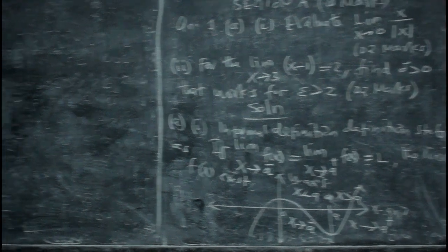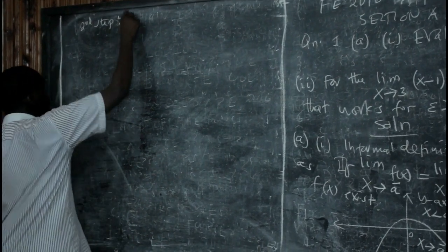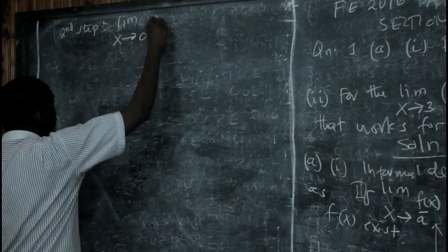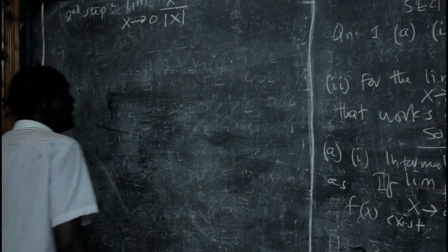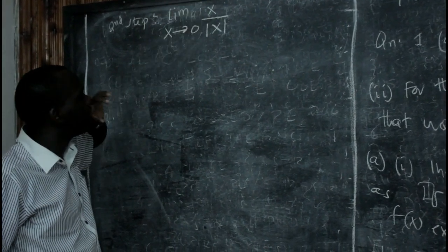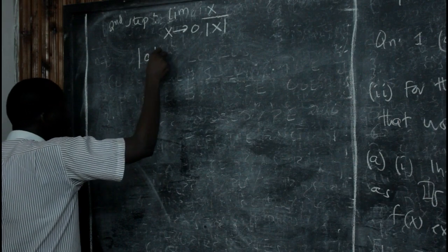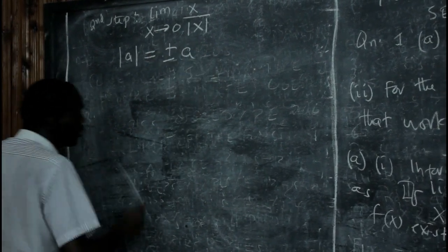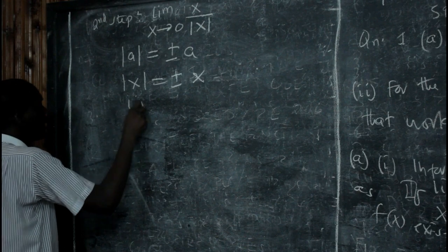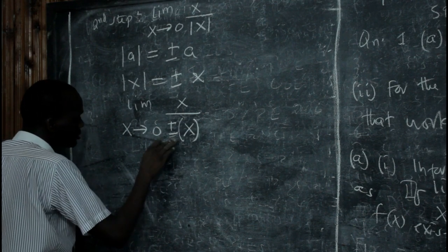We are looking at the limit of f(x) = x over the absolute value of x as x approaches zero. This is called the rational absolute function. We have an important property: the absolute value of x equals plus or minus x. So the limit as x approaches zero becomes x over plus or minus x. Our intention is to look at the left-hand limit and the right-hand limit. To get the left-hand limit, we take the same step — we find the limit of f(x) on the right-hand side and the left-hand side.